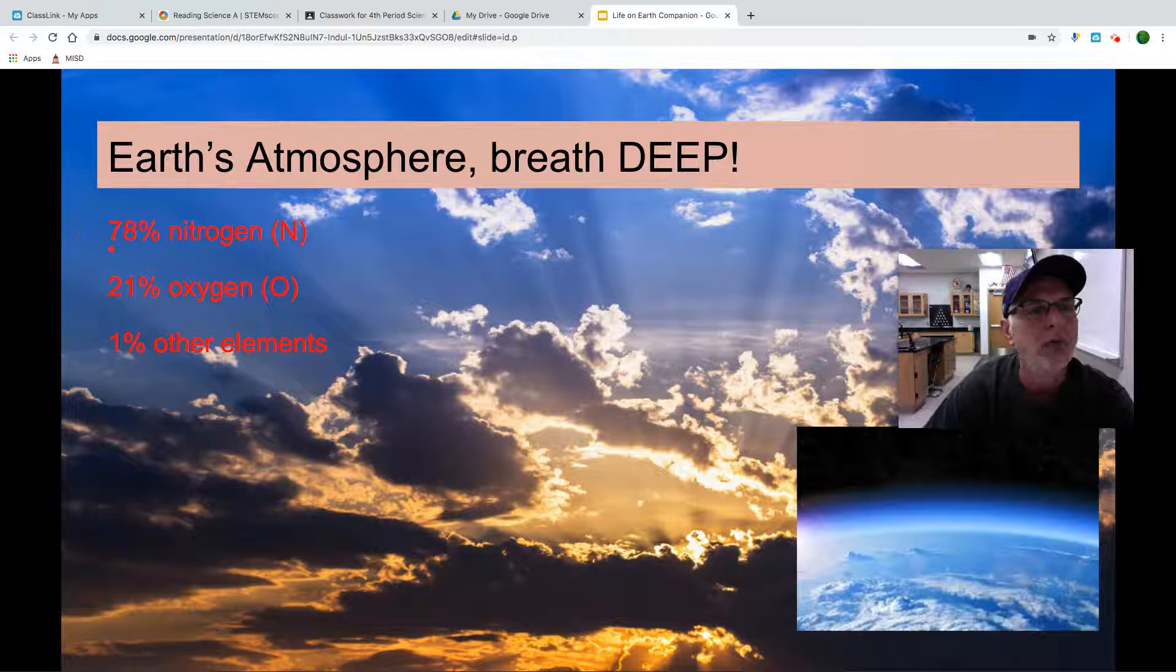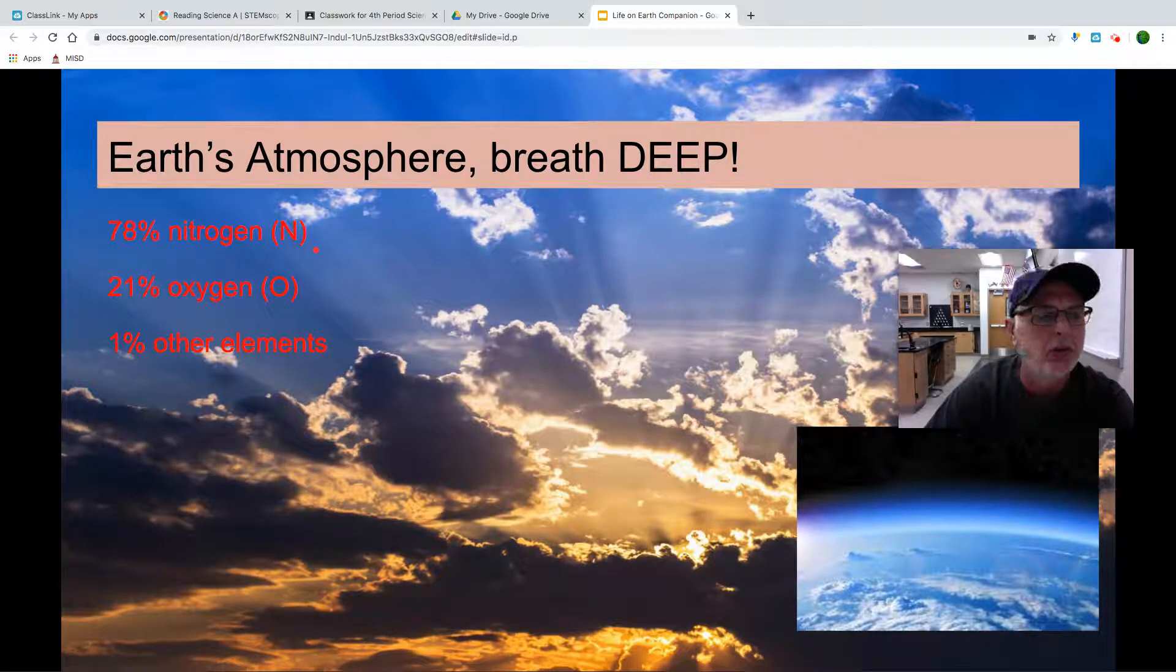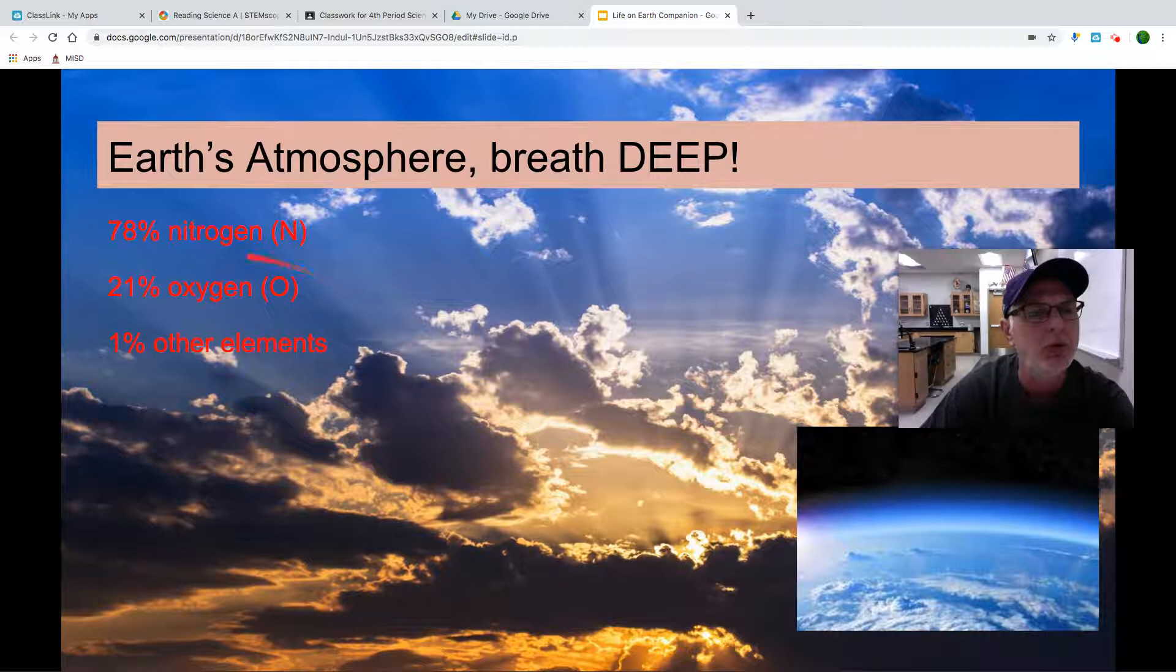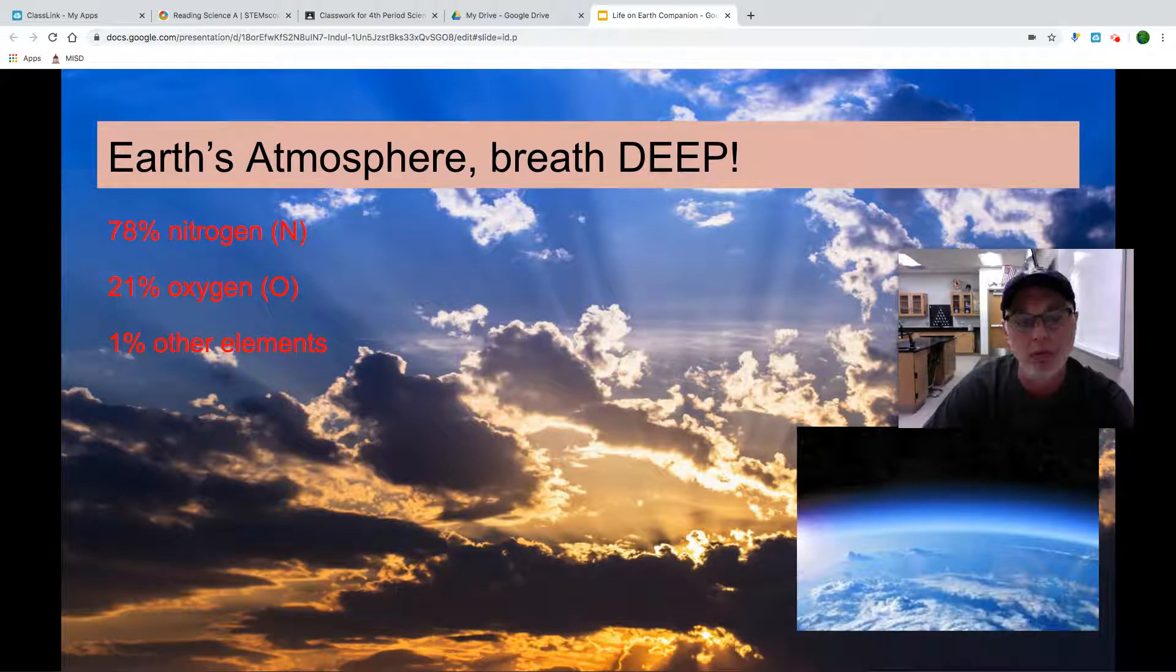Our atmosphere is composed of 78% nitrogen, which is a gas that is considered inert, which means that it doesn't burn, it doesn't react, it just kind of is there. 21% oxygen, this is the important statistic for us. At 23% oxygen, everything would become so flammable that we wouldn't be able to live on Earth.